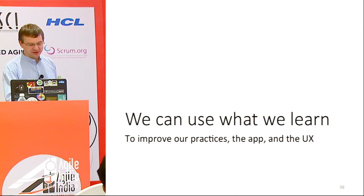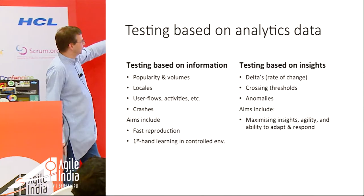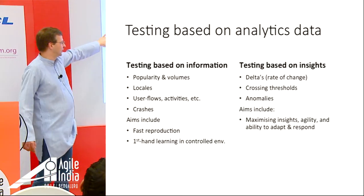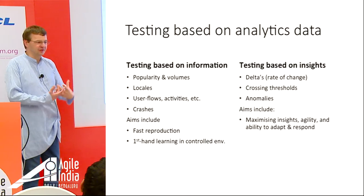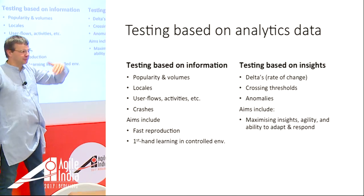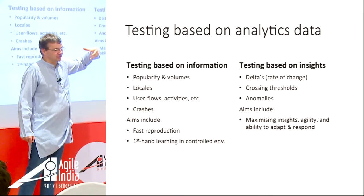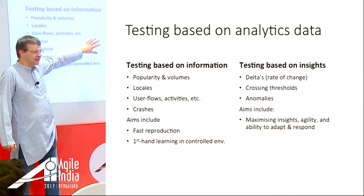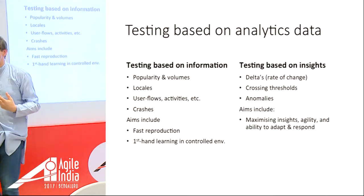What can we do with all this information? Hopefully we can improve the software we write and the experience for our users. From a testing perspective I have two broad categories: testing based on information — popularity, volumes, different devices, flows, crashes — focusing on reproducing field-reported issues quickly in our own environment. And looking for insights: rates of change, drop-off rates, crossing thresholds like running out of memory, and anomalies we didn't predict — users doing something or the application behaving in ways we never expected.